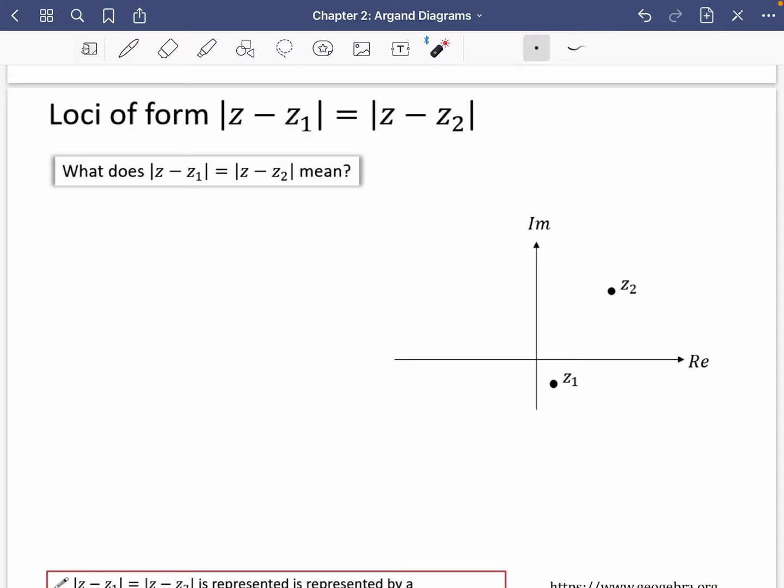Okay, so we're going to be looking at loci that look in this particular form. Previously, we've just done the modulus of z minus z1 equals some kind of constant, but this time the complex number z, which is the thing that can vary, is on both sides of the equals sign. So what is that going to mean?